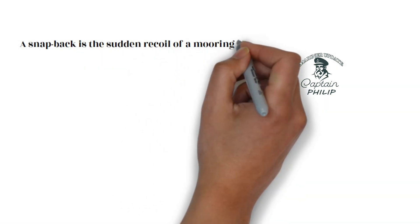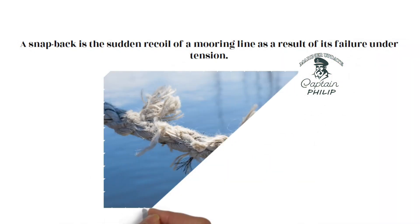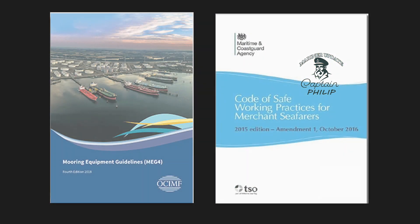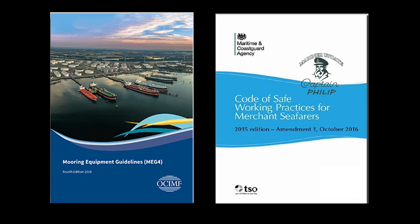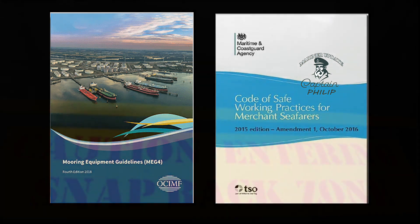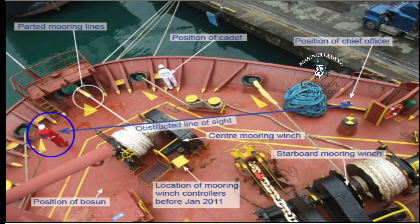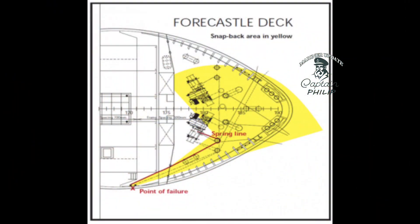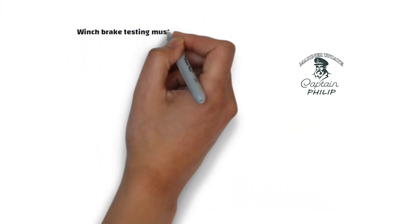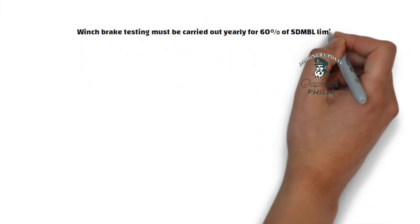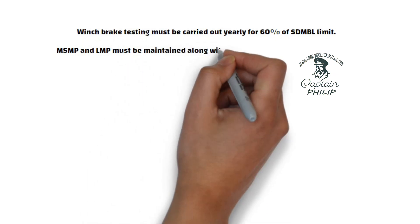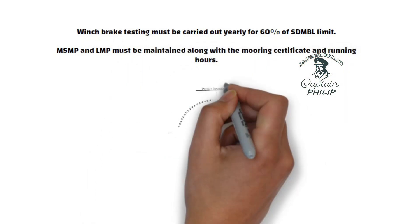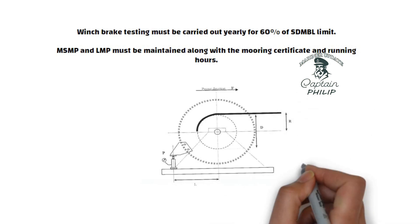A snapback is the sudden recoil of a mooring line as a result of its failure under tension. As per CEOS, WEP, and MUG4, the entire mooring area must be considered as a snapback zone. It is also recommended that a bird's-eye view of the mooring deck is produced to identify potentially dangerous areas, and clear warning signage must be provided. Winch brake testing must be carried out yearly for 60% of the SWL/MBL limit. MSMP and LMP must be maintained along with the mooring certificate and running hours.